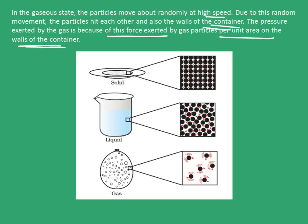The picture here shows how particles are arranged in solid, liquid, and gas. In solids, the particles are very densely packed, so their movement is very restricted. In liquids, movement is a little bit freer, as the force of attraction between particles is a little less compared to solids. But in gas, this force of attraction is very less, and hence the particles can move easily and are very loosely bound to each other.